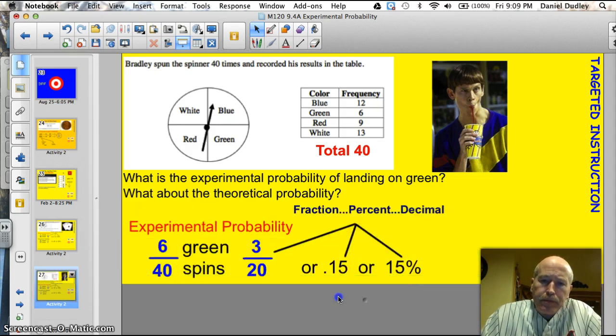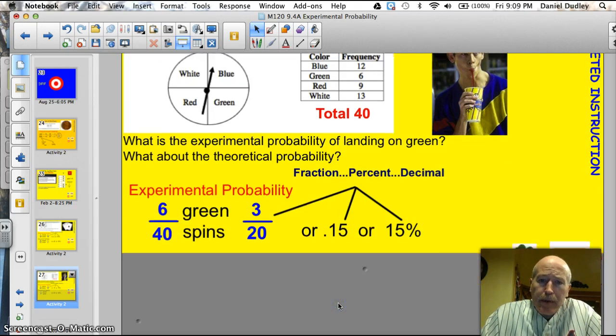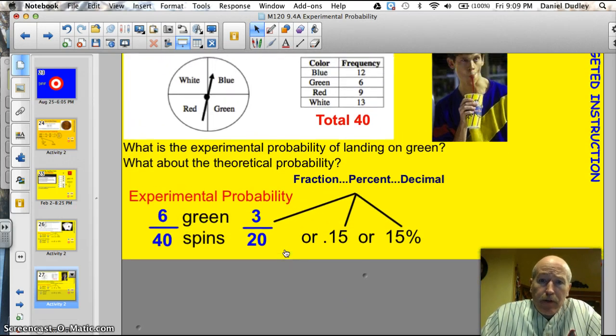Well, let's see how he did. Well, experimentally, he did it 40 times, and he had 6 greens. Right here, 6 of them. So he had 6 greens. That means, if I reduce that down, that is 3/20, was the experimental probability, or 0.15 as a decimal, or 15%.